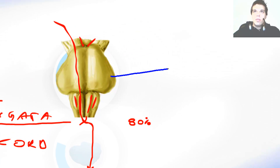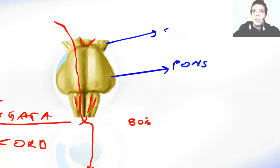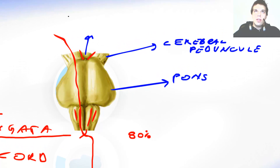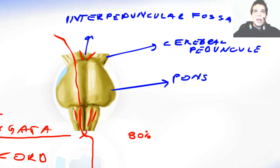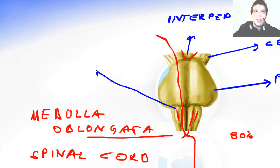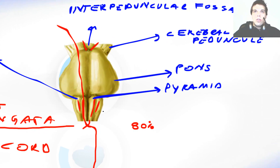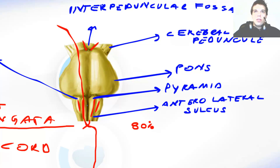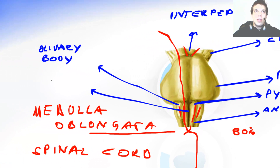Let's write this all down. This was the pons. This was the cerebral peduncle. This was the interpeduncular fossa. Then we had the olivary body. We had the pyramids. We had the anterolateral sulcus over here, and the anterior median sulcus over here.